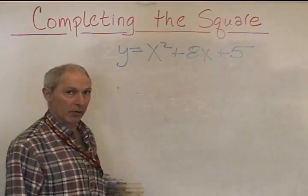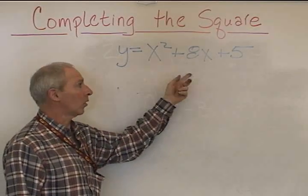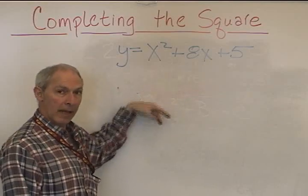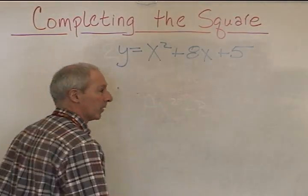But now we want to find the vertex. We can go through the manipulations here, or we can simply complete the square and then have the vertex spill out as we convert this to vertex form. So here we go.